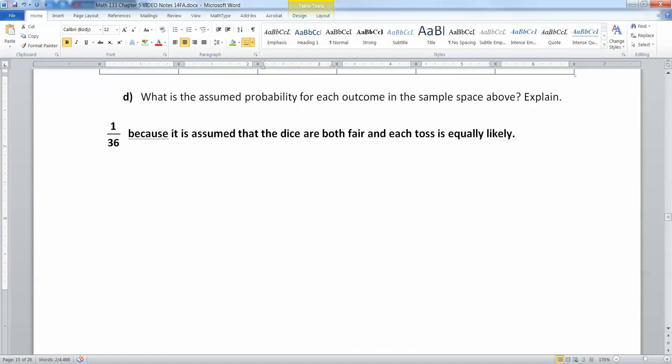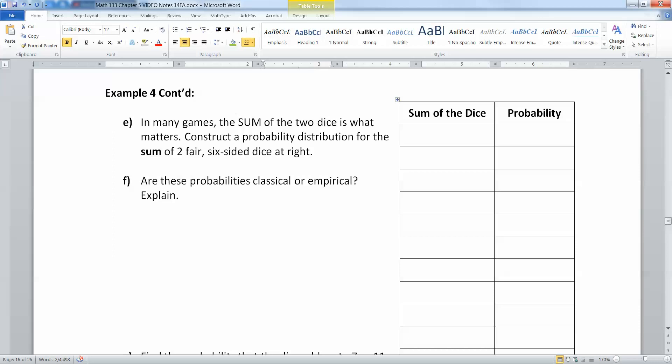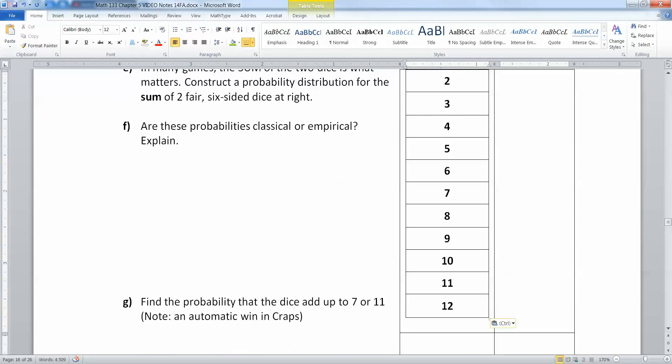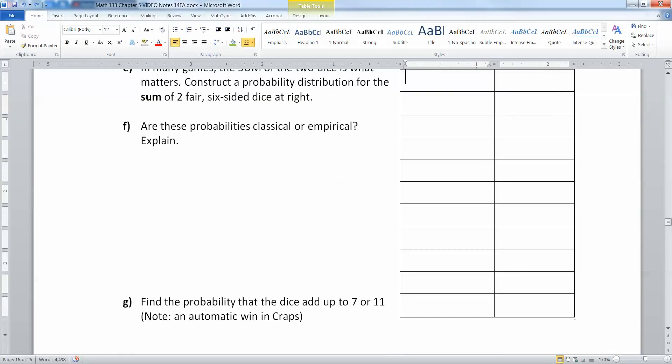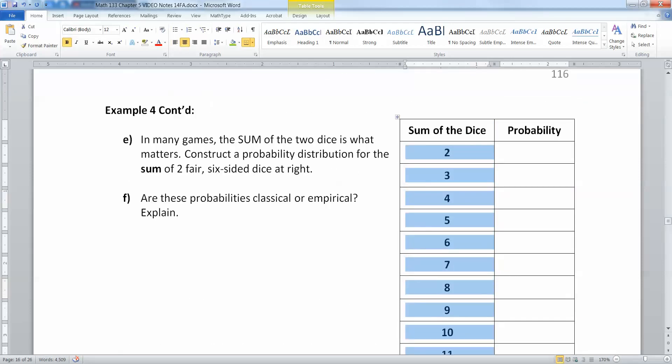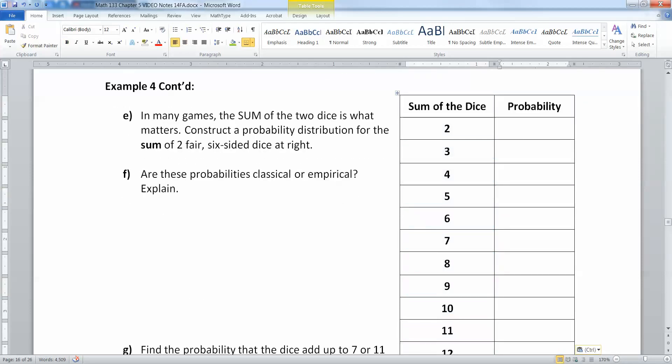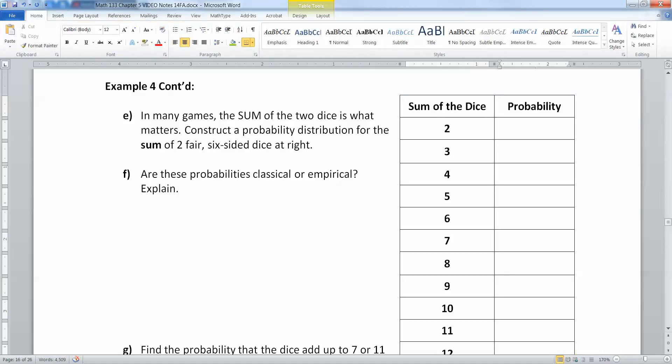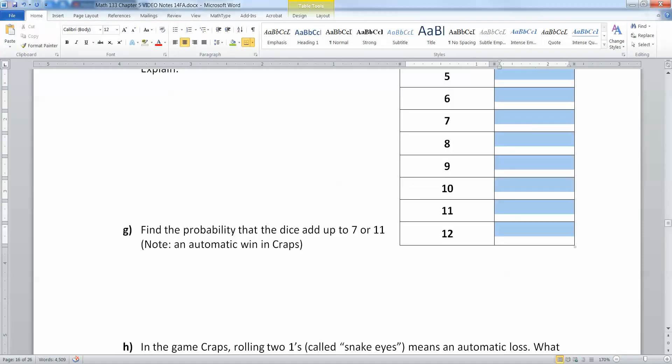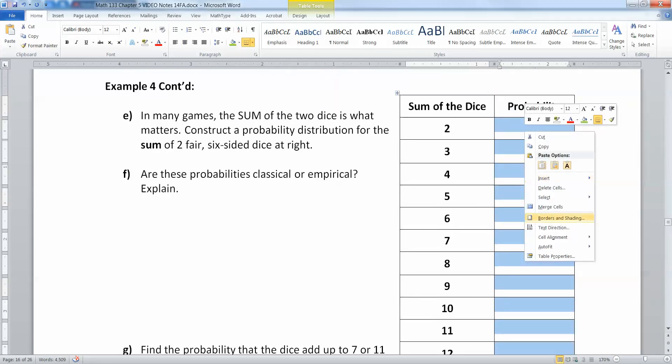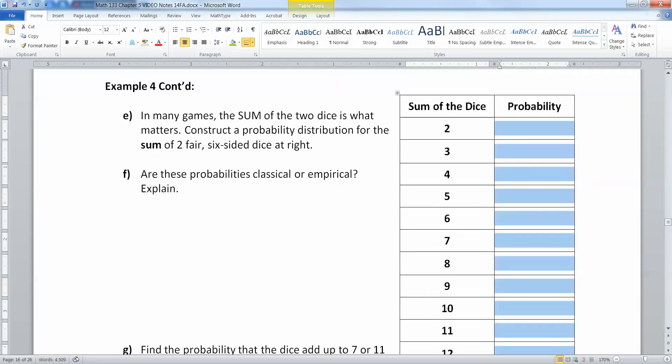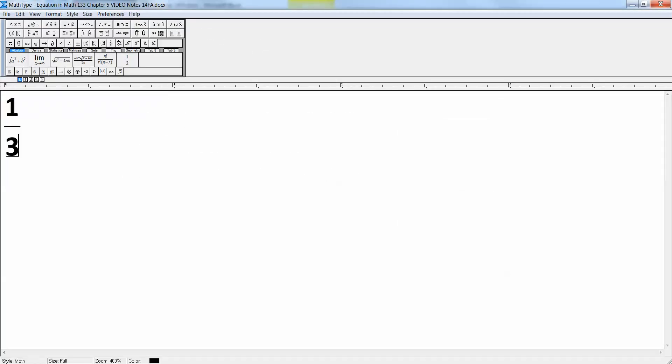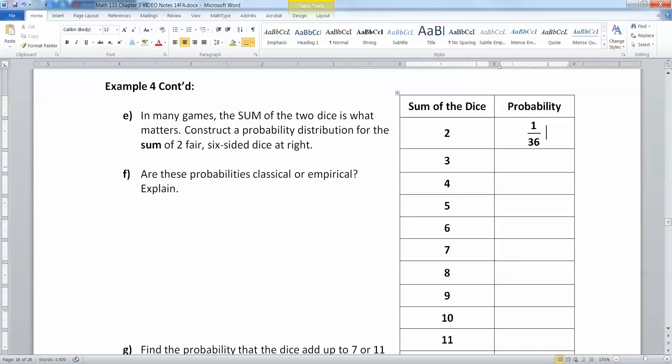So let's find what the possibilities are, and then their probabilities. So the possibilities are kind of obvious. The lowest you can roll is a two. That would be one and one. The highest you could roll is a 12. Now, what's the probability of two? Well, that would be one out of 36 because there's 36 options, and only one of them is snake eyes, one and one. So this would be one out of 36.